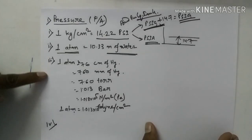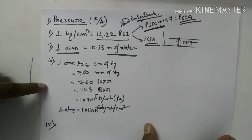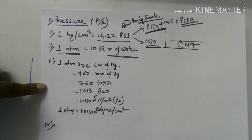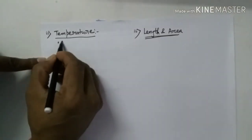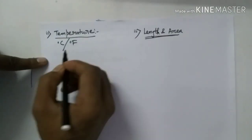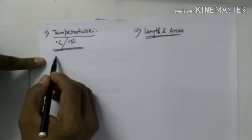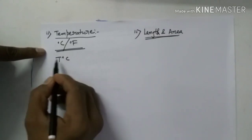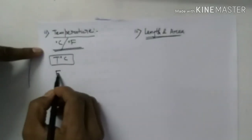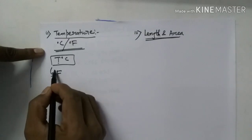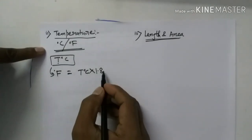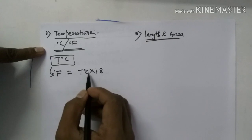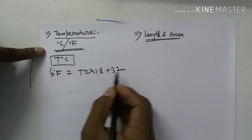Now let me move to temperature conversion. Temperature is represented either in degrees Centigrade or degrees Fahrenheit. If you have the temperature in degrees Centigrade and need to convert to degrees Fahrenheit, simply multiply the Centigrade value by 1.8 and then add 32. That gives you the Fahrenheit equivalent.